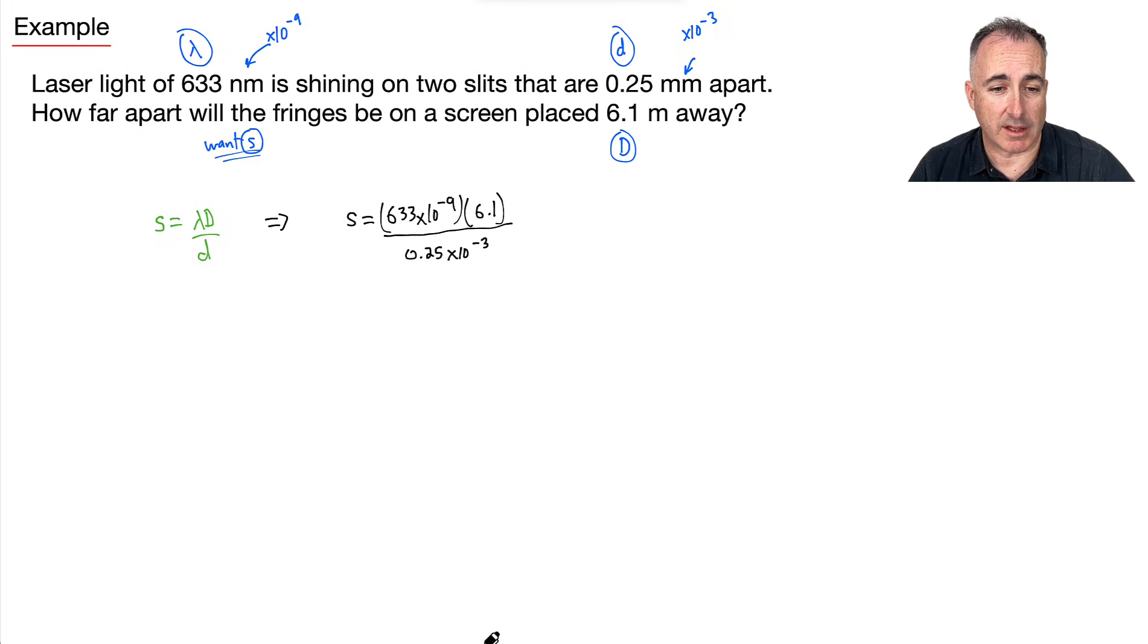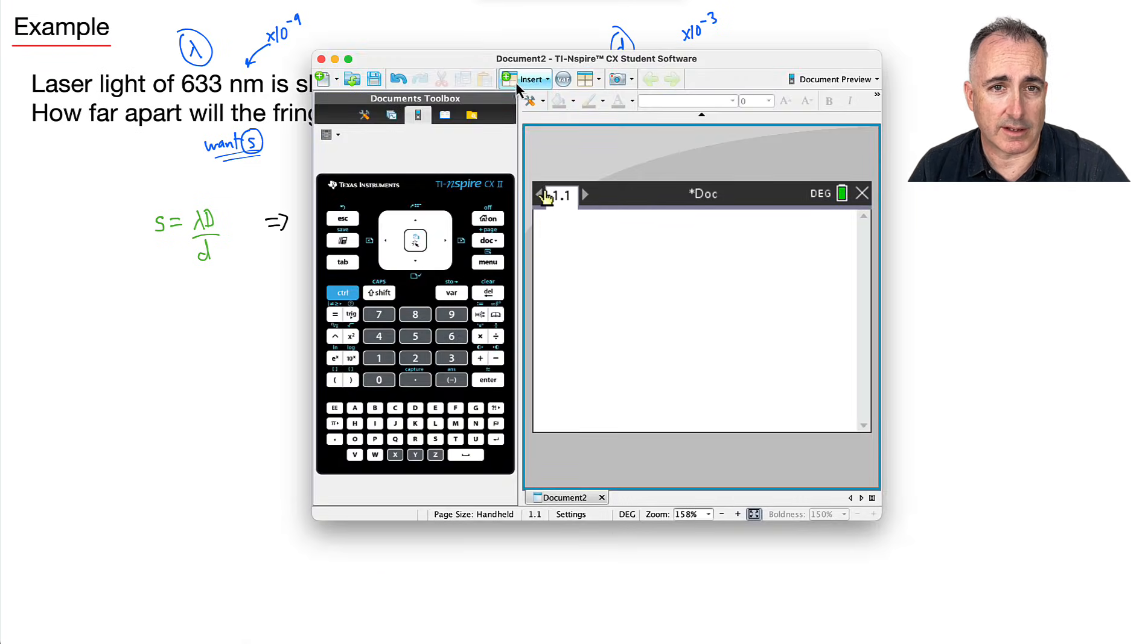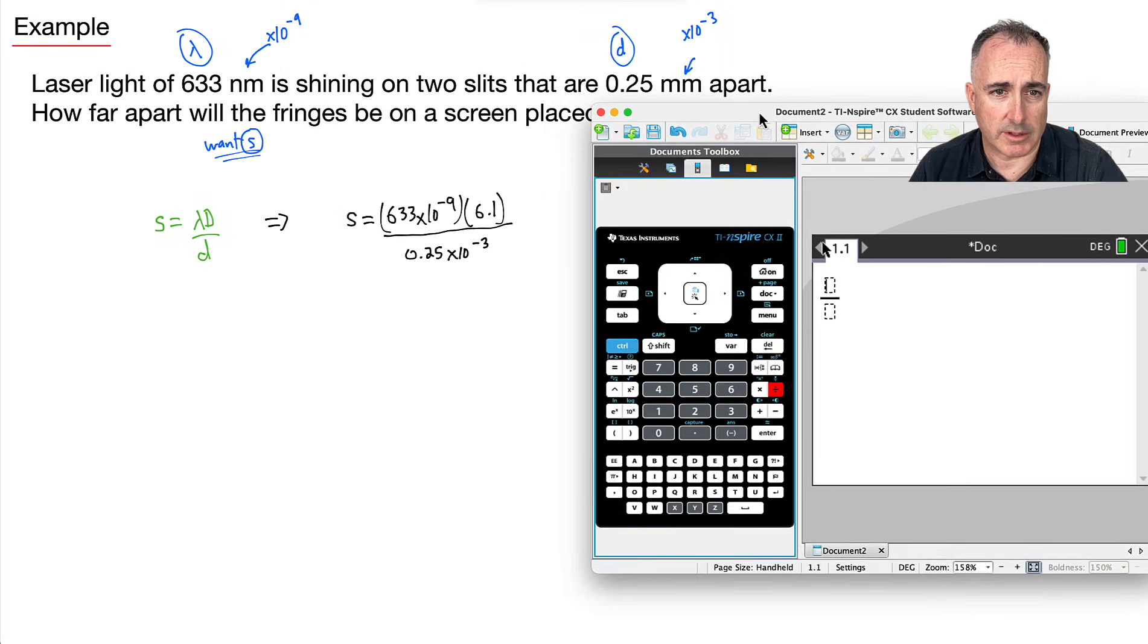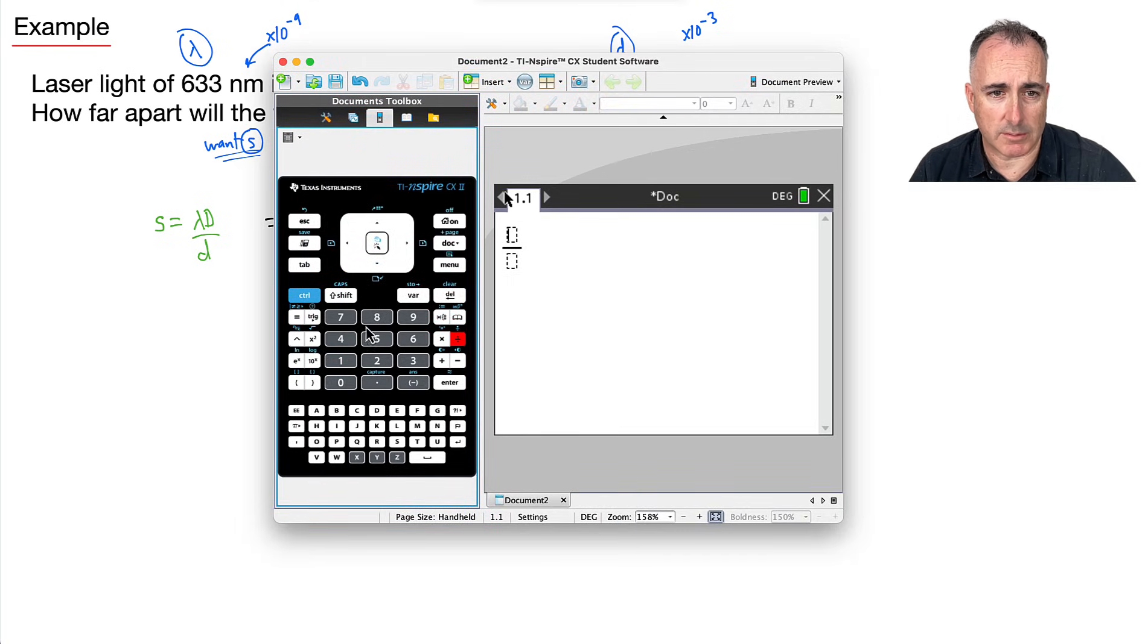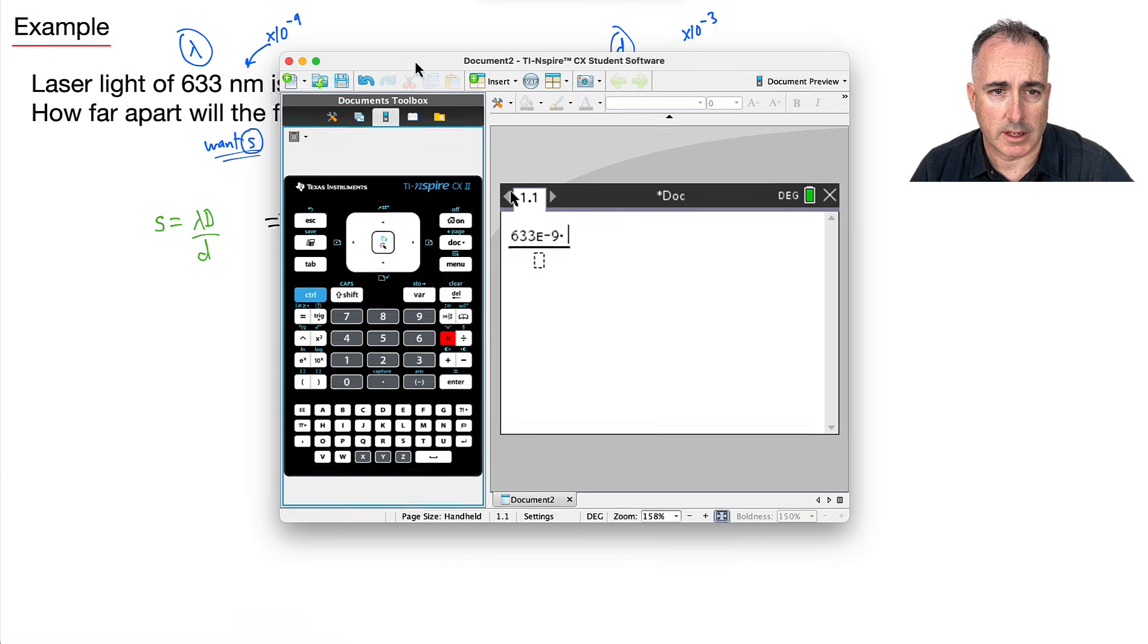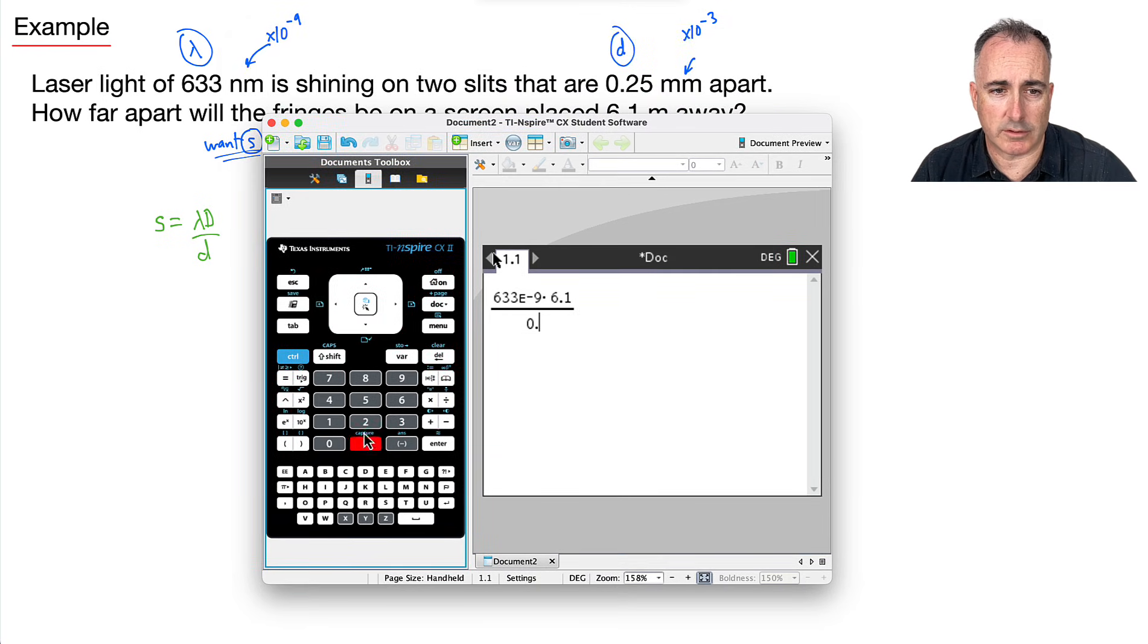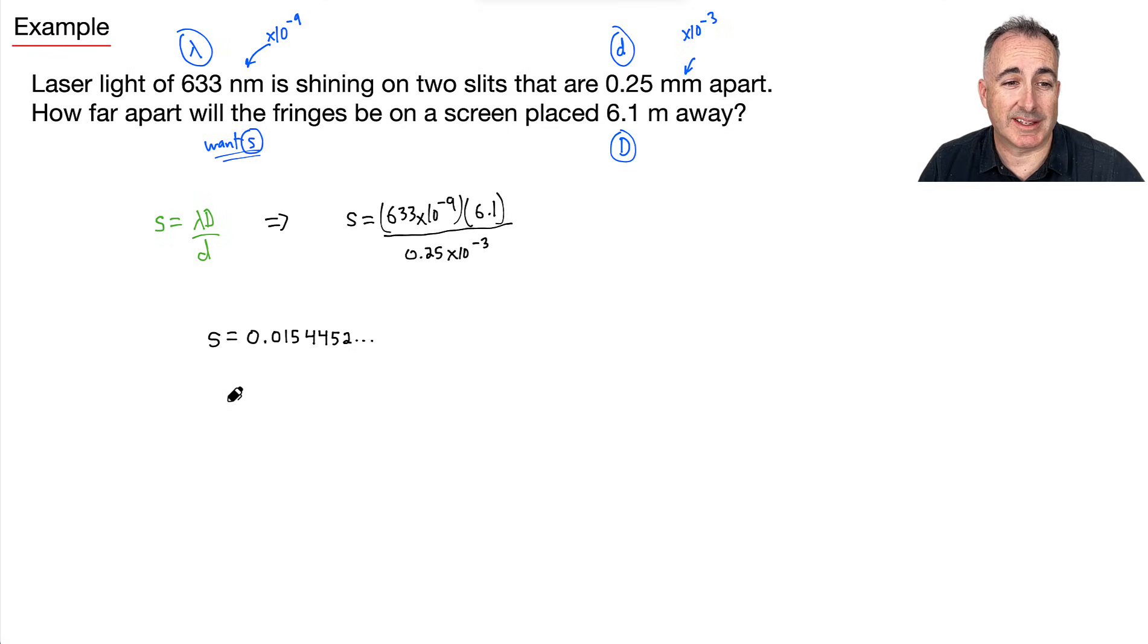So I can just solve this on my calculator. I can just get out my calculator. And let's see. First, I want a fraction. And I'm going to do, let's see, it was 633 times 10 to the power of minus 9. I'll do that now. 633 times 10 to the power of minus 9. Times, I want 6.1 here. Then on the bottom, I put the 0.25. And don't forget, times 10 to the power of minus 3. I get this answer here. I get 0.0154452.